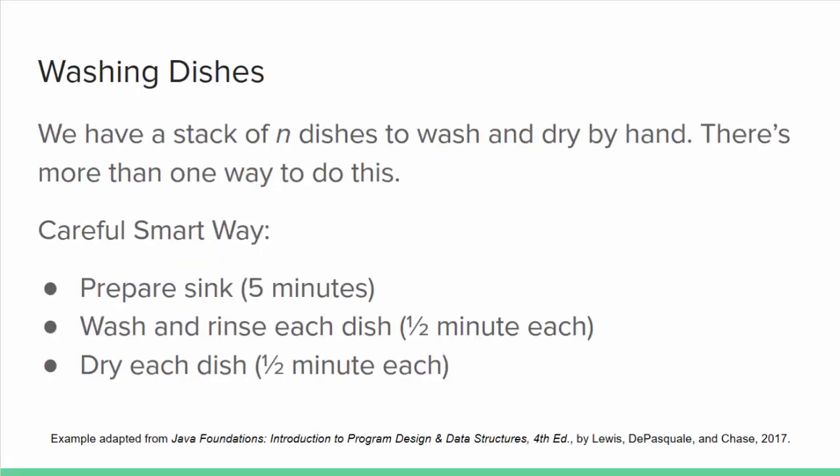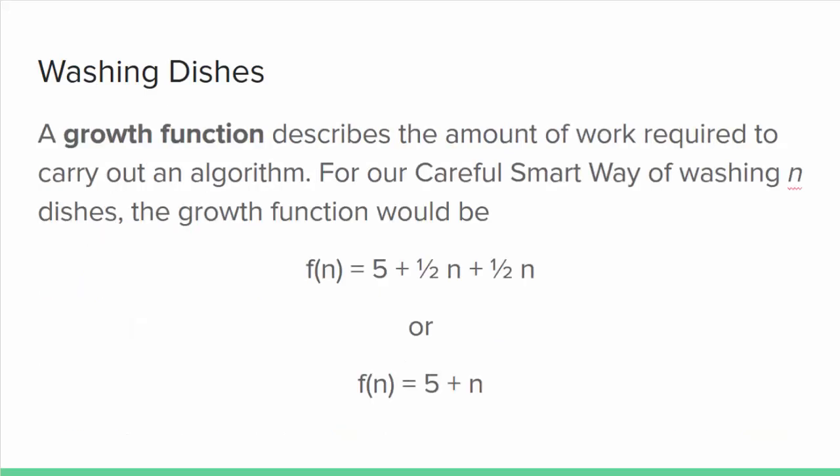Let's start with a real-world example, washing dishes by hand. Let's say it takes 5 minutes to fill the sink with hot soapy water, 30 seconds to wash and rinse a dish, and 30 seconds to dry a dish. It will take n minutes to wash and dry n dishes, plus the 5 minutes of preparing the sink. We would say the growth function for this algorithm, representing the amount of work it takes to wash and dry n dishes, is f(n) = n + 5.